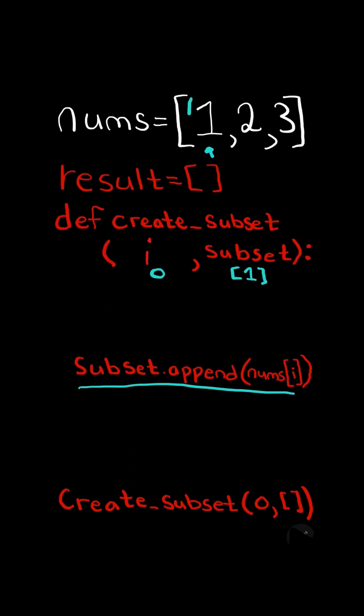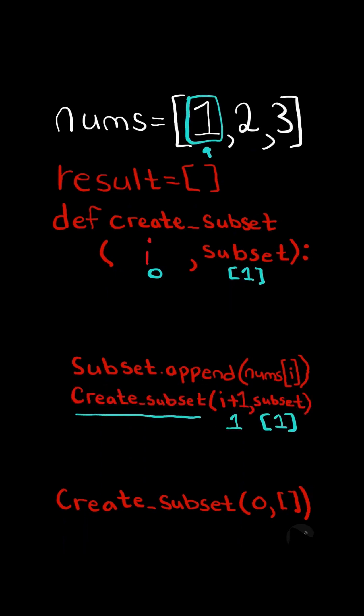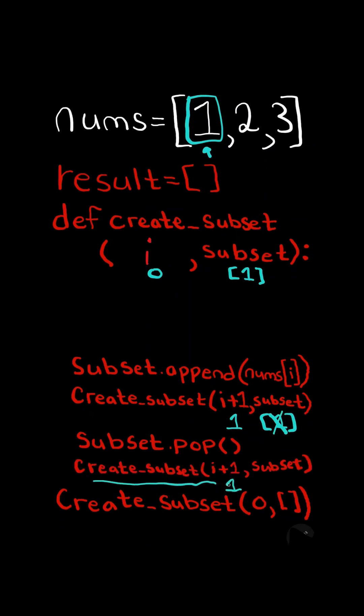Then we append the number at the index to our subset. Then we recursively call the function with the incremented index and the updated subset. We then backtrack by popping the element from the subset and recursively call the function again with the incremented index and the empty subset.